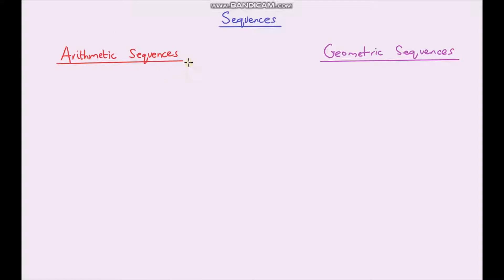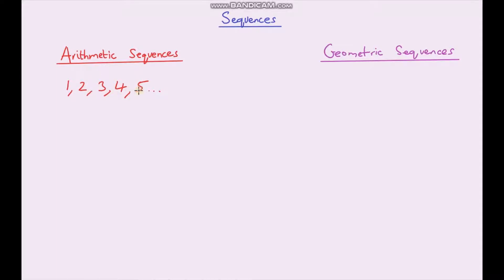An arithmetic sequence is just a sequence that goes up or down by the same amount each time. The most obvious example is our counting numbers. Starting from one: one, two, three, four, five, and so on forever. Each term gets increased by one each time — to go from one to two we're adding one, from two to three we're adding one. Because we're adding the same amount each time, that's what defines an arithmetic sequence.